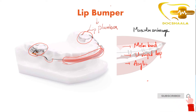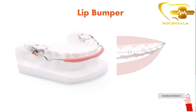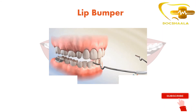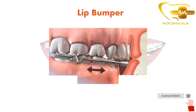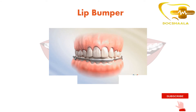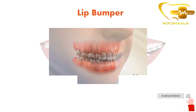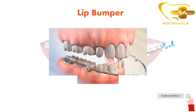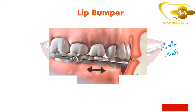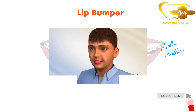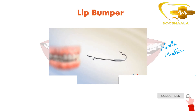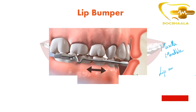Let us further look into what it looks like on a patient. The molar bands are attached to the molars, and this is the U-shaped loop that is being placed on the mandible. One thing you must remember here is that the lip bumper is used on both maxilla and also mandible. The main function of the lip bumper is that it shields the lips away from the teeth.